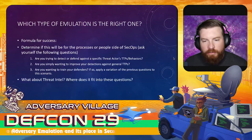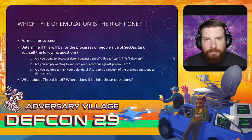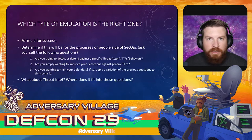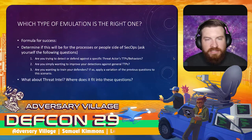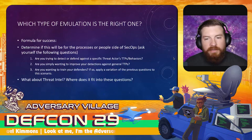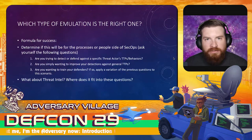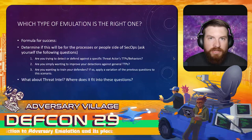For example, we could emulate a specific threat actor because we want our defenders to have exposure to that threat actor — say they're known to target our finance organization. But we're also testing our detections against TTPs. By combining these two, we can have a great exercise that benefits both processes and people — we're testing response procedures and improving the skills of our defenders.